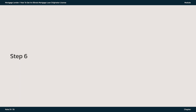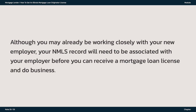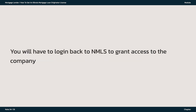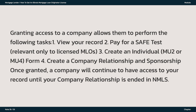Step 6: Get Hired. Although you may already be working closely with your new employer, your NMLS record will need to be associated with your employer before you can receive a mortgage loan license and do business. You will have to log back in to NMLS to grant access to the company. Granting access to a company allows them to: 1. View your record; 2. Pay for a SAFE test, relevant only to licensed MLOs; 3. Create an individual MU-2 or MU-4 form; 4. Create a company relationship and sponsorship. Once granted, a company will continue to have access to your record until your company relationship is ended in NMLS.